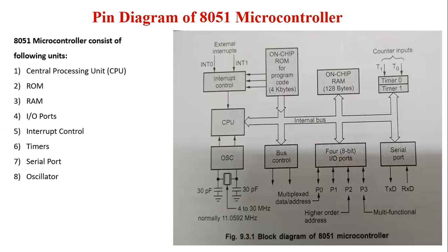The next unit is ROM. A 4K memory code is incorporated as on-chip ROM in the 8051 microcontroller. The 8051 ROM is a non-volatile memory, meaning that its contents cannot be altered.